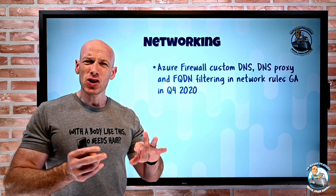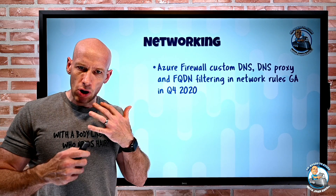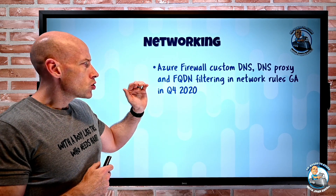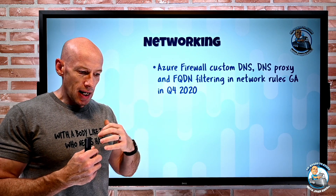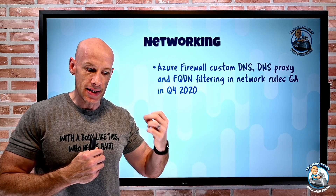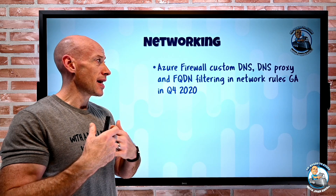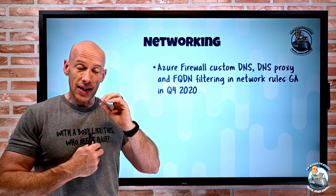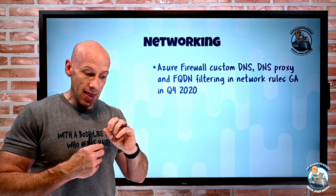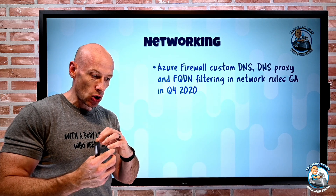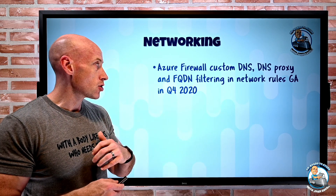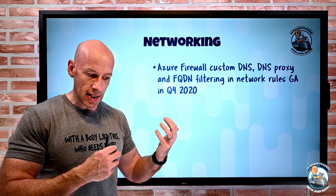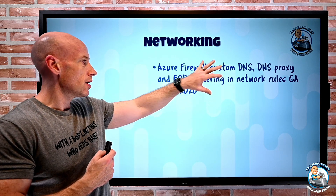On the networking side, I mentioned these back in June or July, so I won't go into a lot of detail, but these Azure Firewall features are GA-ing this quarter. Firewall custom DNS means I can configure the Azure Firewall to use custom DNS servers. DNS proxy lets me enable a proxy feature on the firewall for consistency in fully qualified domain name filtering rules. Now both inbound and outbound from the internet I can use fully qualified domain names — so those rules are all hitting GA.